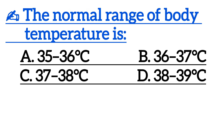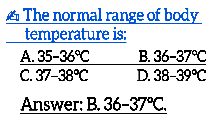Next one is: the normal range of body temperature is? Correct answer is option B, 36 to 37 degrees Celsius.